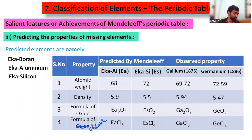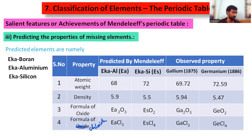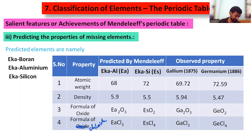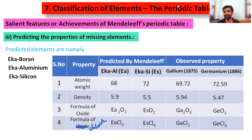Three salient features have been discussed so far. The fourth salient feature — correction of atomic weights — will be continued in the next session.